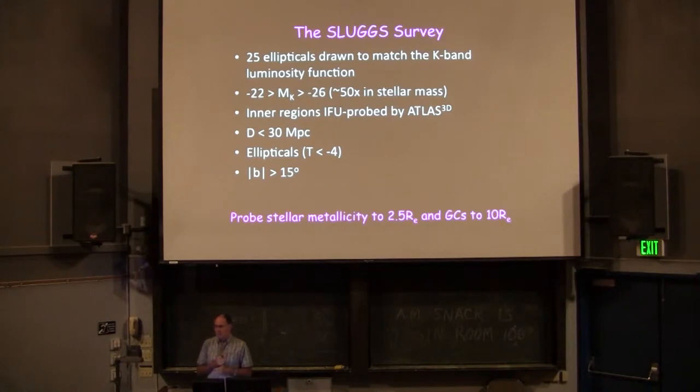For example, the Sauron Atlas 3D survey had a mean effective radius coverage of about 0.7 RE for the galaxies. Of the 270 elliptical galaxies that they studied, they went out typically to about only 0.7 RE. So although they looked at metallicity gradients, it didn't take us further out particularly than the long slits can do.